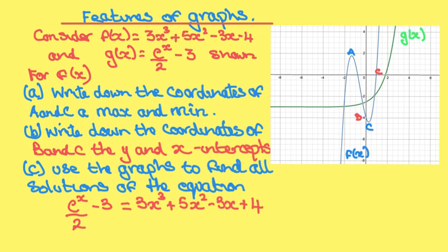If we look at the diagram that we've been given, we've been given two graphs. The first one, the blue one f(x), is the graph of 3x³ + 5x² - 3x - 4. The green graph is g(x) = e^(x/2) - 3.